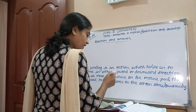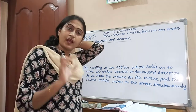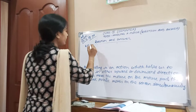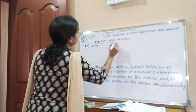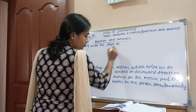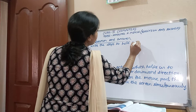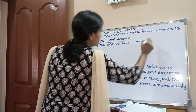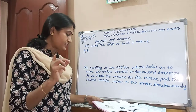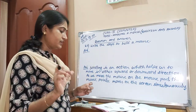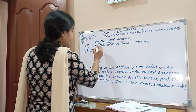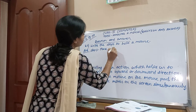Next question, question number 4: Write the steps to hold the mouse — how to hold the mouse, step by step. Answer: Step 1 — place your thumb on the left side of the mouse.